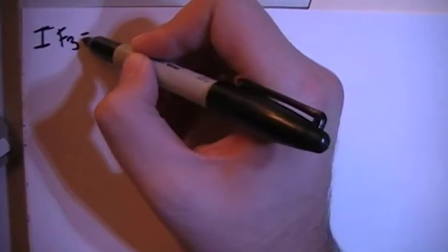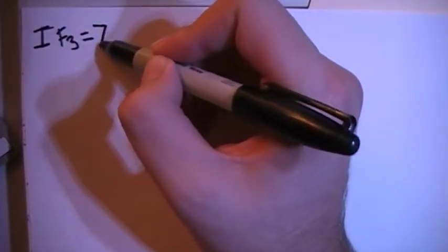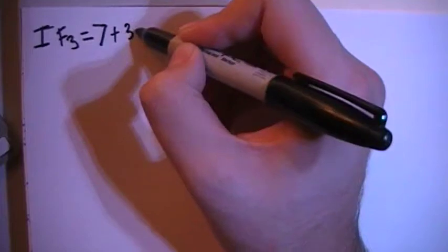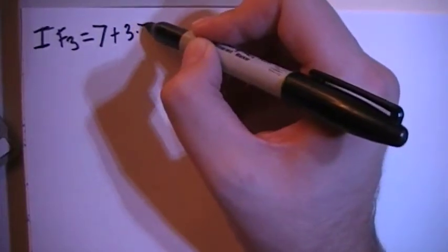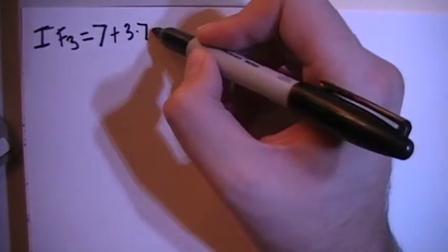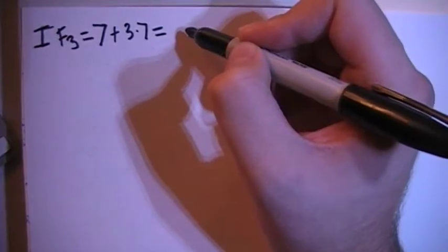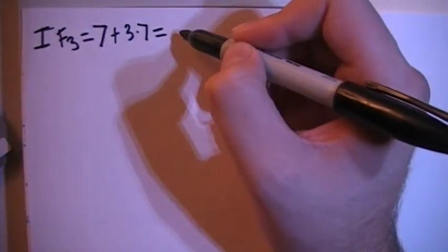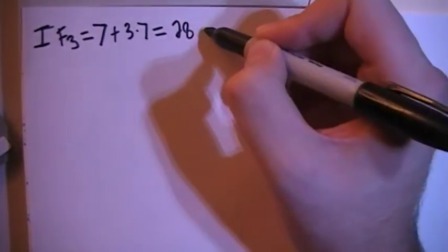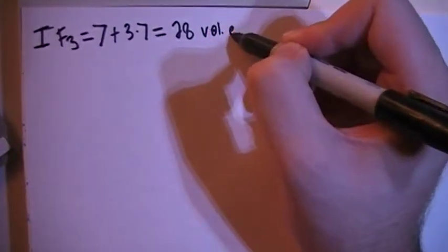And that's going to give us 7 valence electrons from the iodine plus 3 fluorines each with 7 valence electrons of their own for a total of 28 valence electrons.